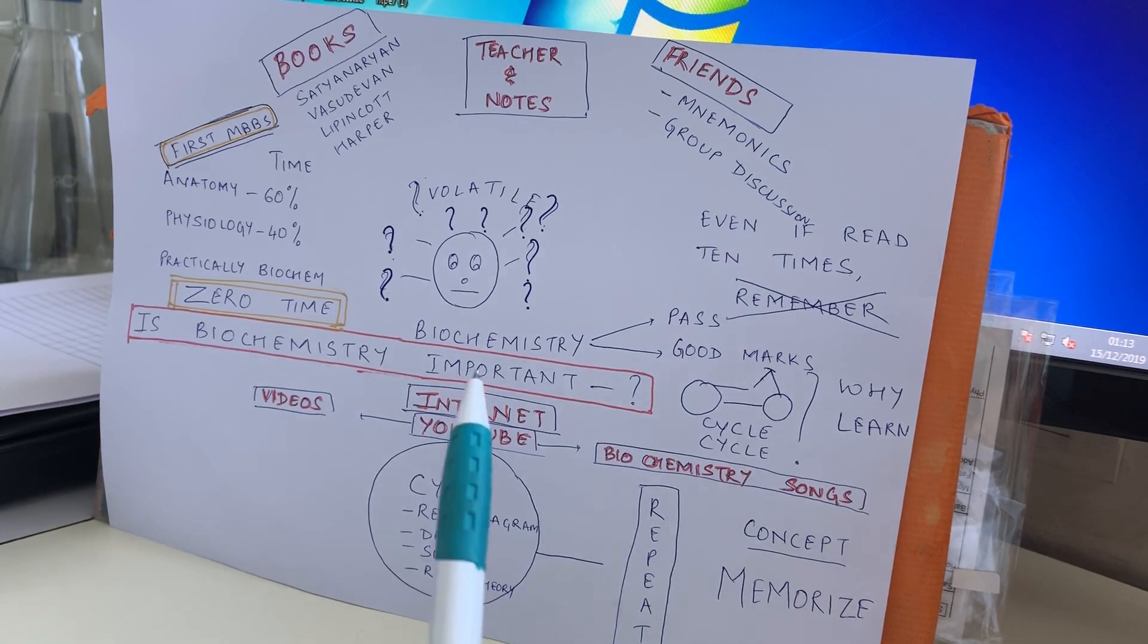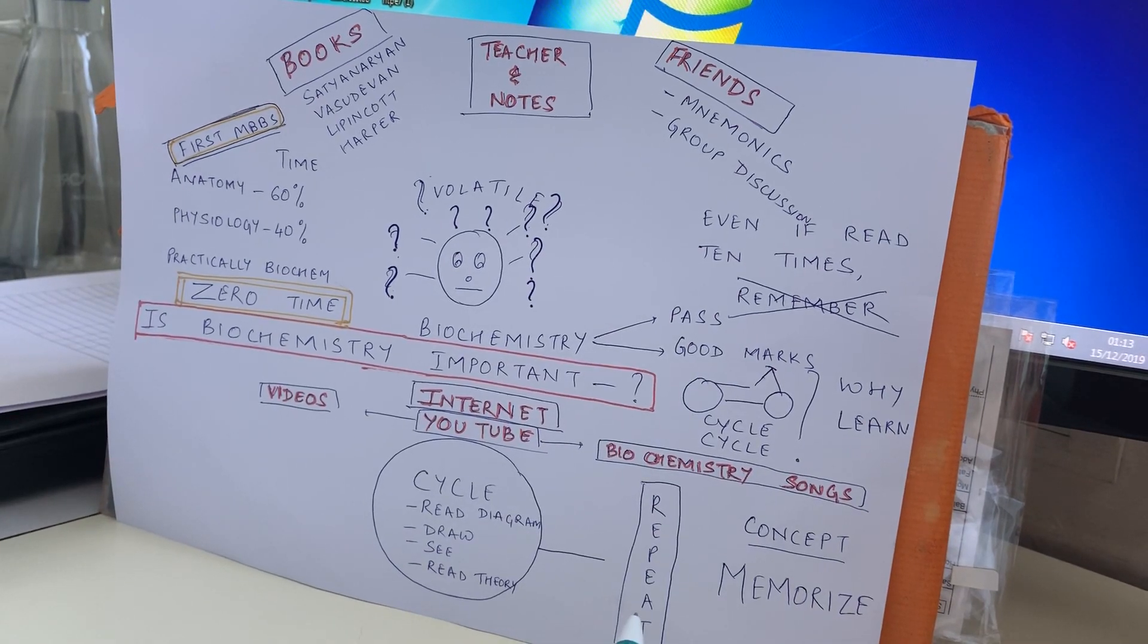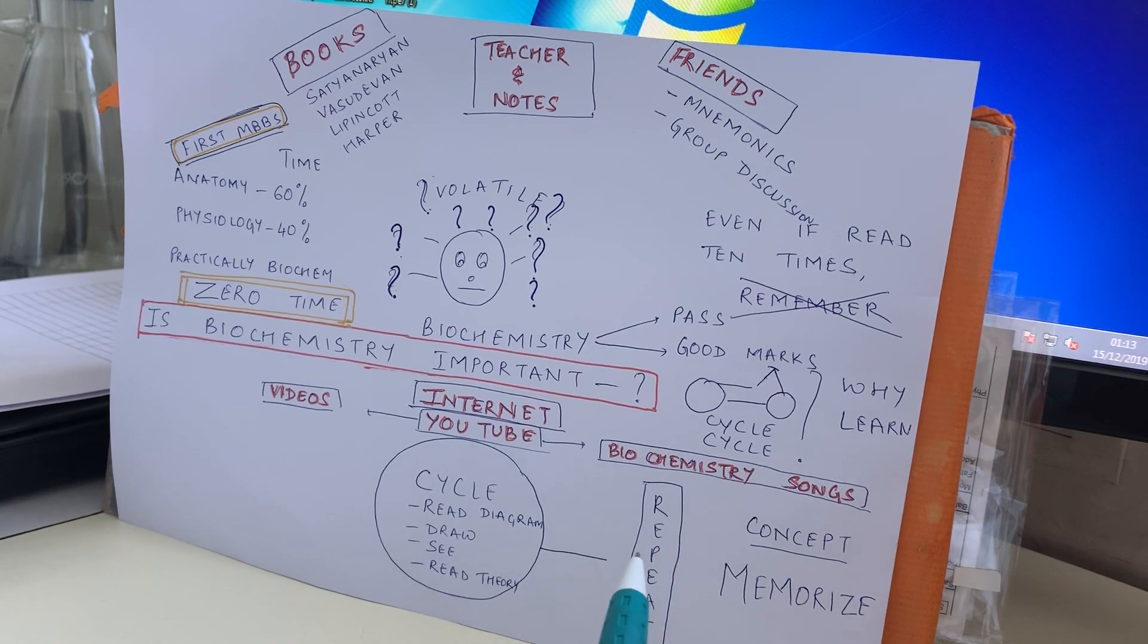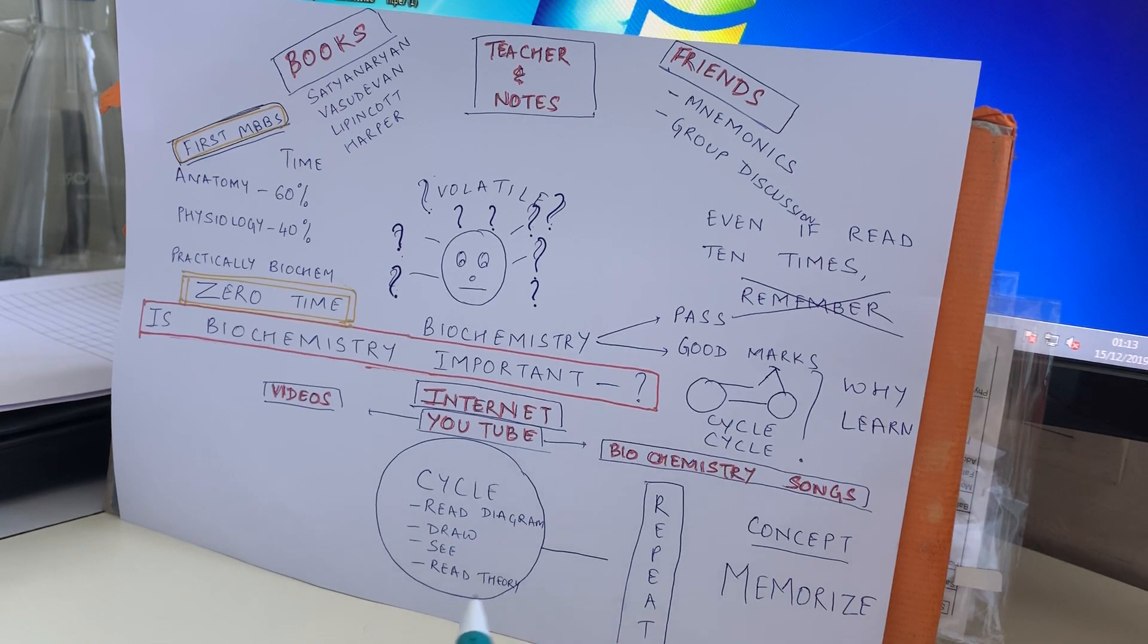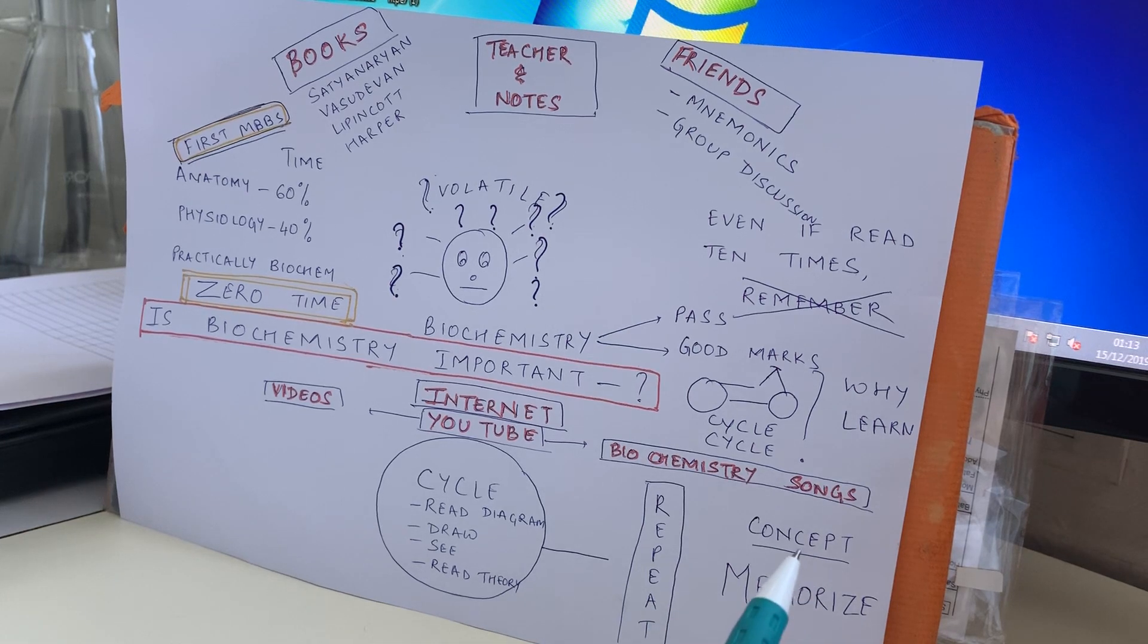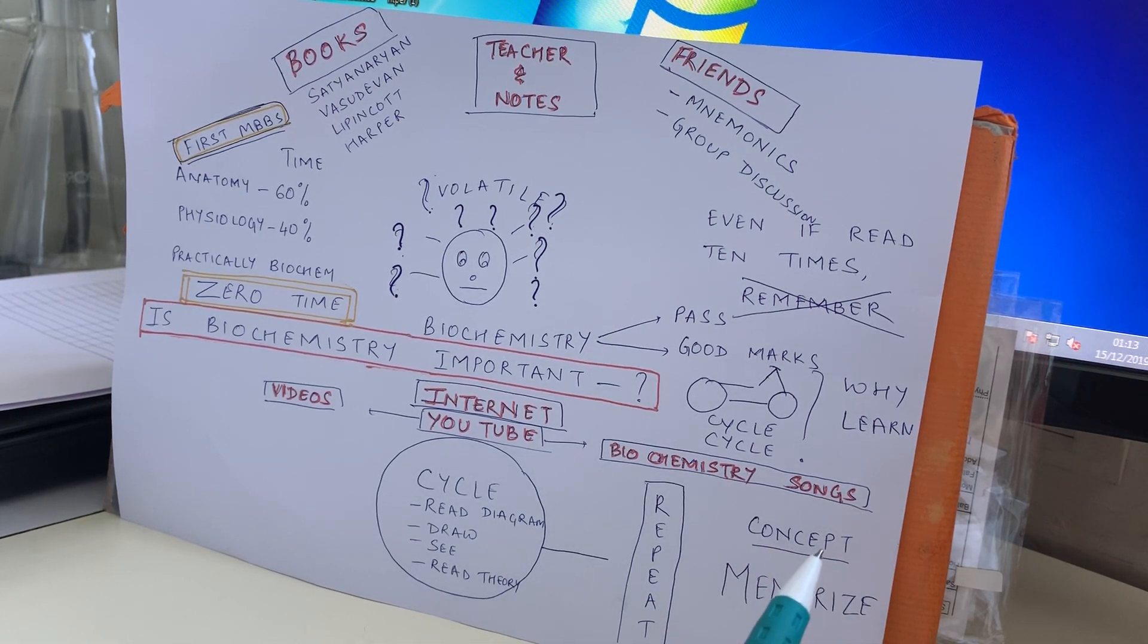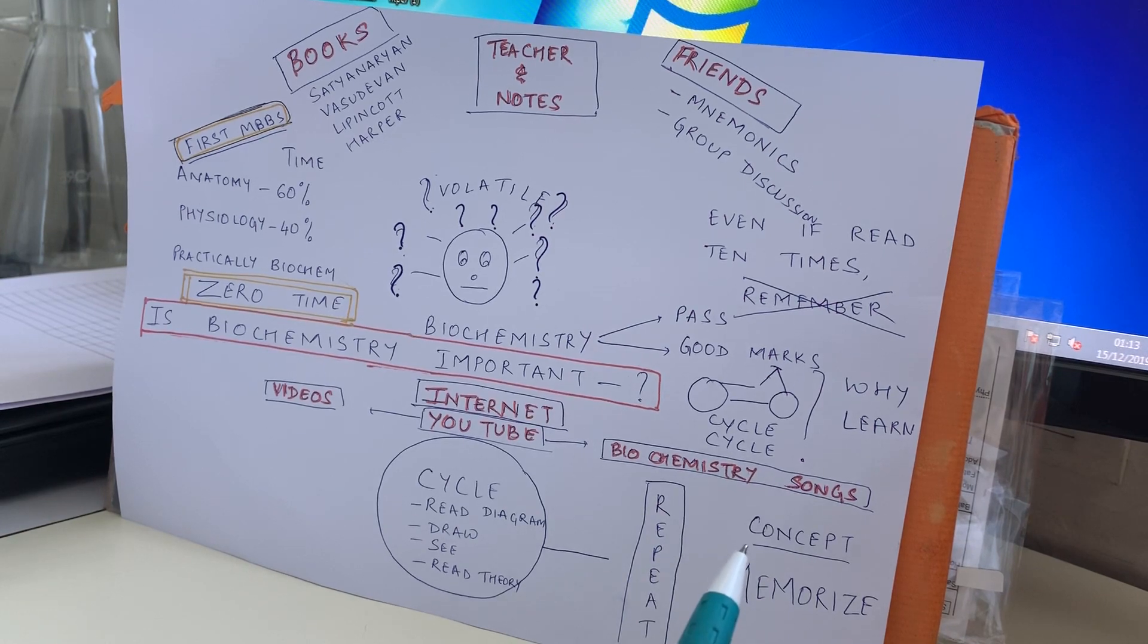Now if you ask me uric acid pathway, I would not be able to tell you. And I was asked uric acid pathway, I had to say the pathway in my MD exam viva, I had to say it, not even write it, I had to say it, so it becomes very difficult. See, people say you have to know the concept to remember biochemistry.